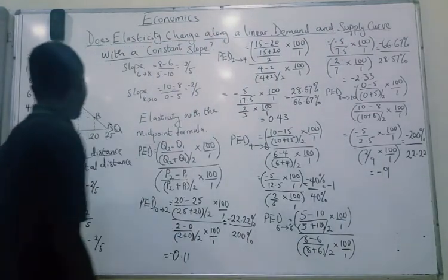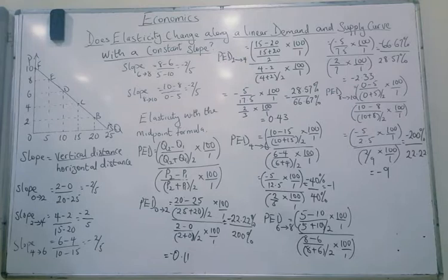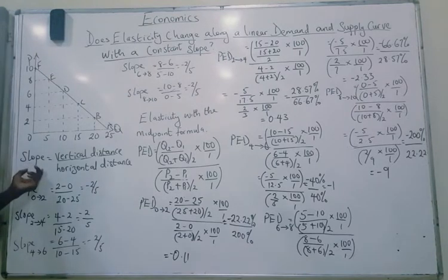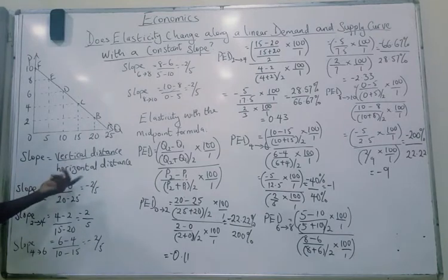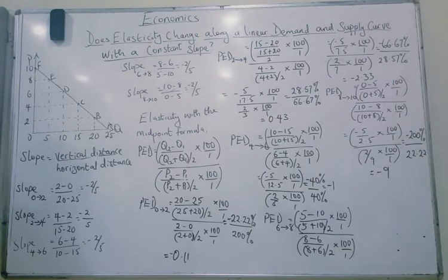We have this particular demand curve here on this graph, and the slope of this demand curve is a constant. We are going to look at that in a bit. The formula to calculate slope is simply vertical distance divided by horizontal distance — what may be called rise over run. Rise is the vertical distance, and run is the horizontal distance.